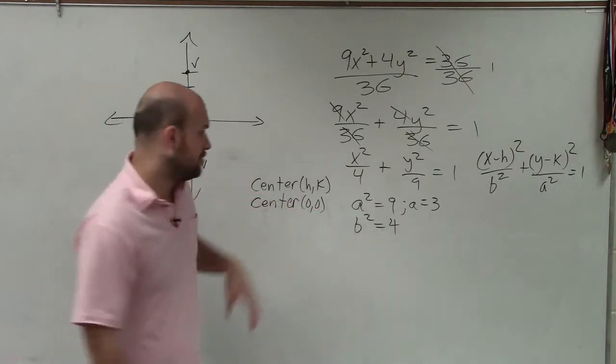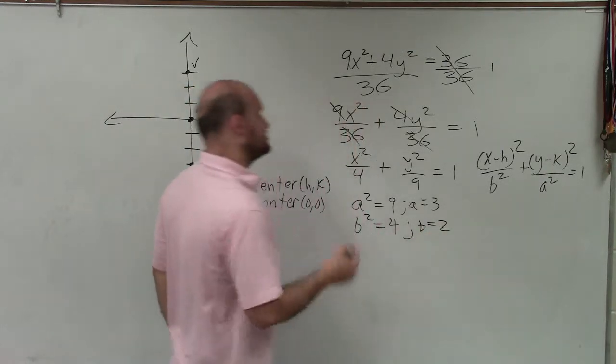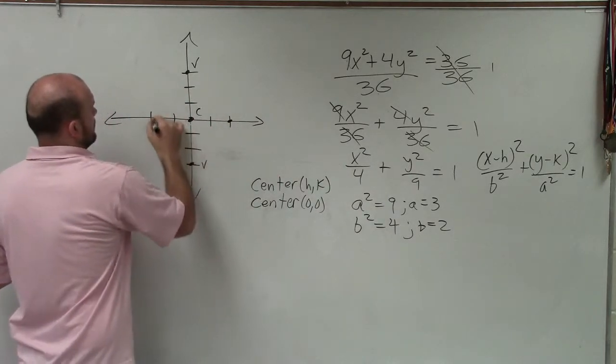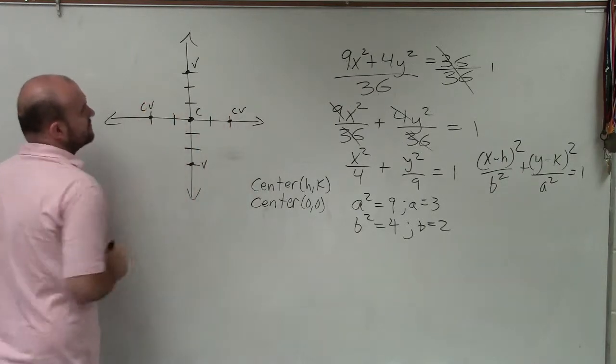b is going to be the distance from the co-vertices. So therefore, by taking the square root of both sides, I can say b equals 2, co-vertices.